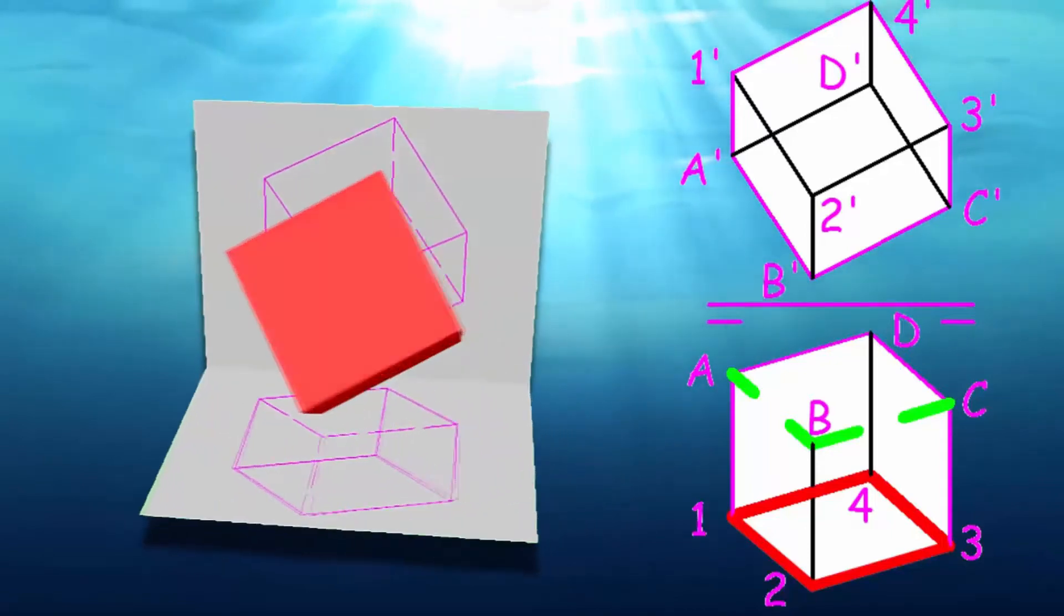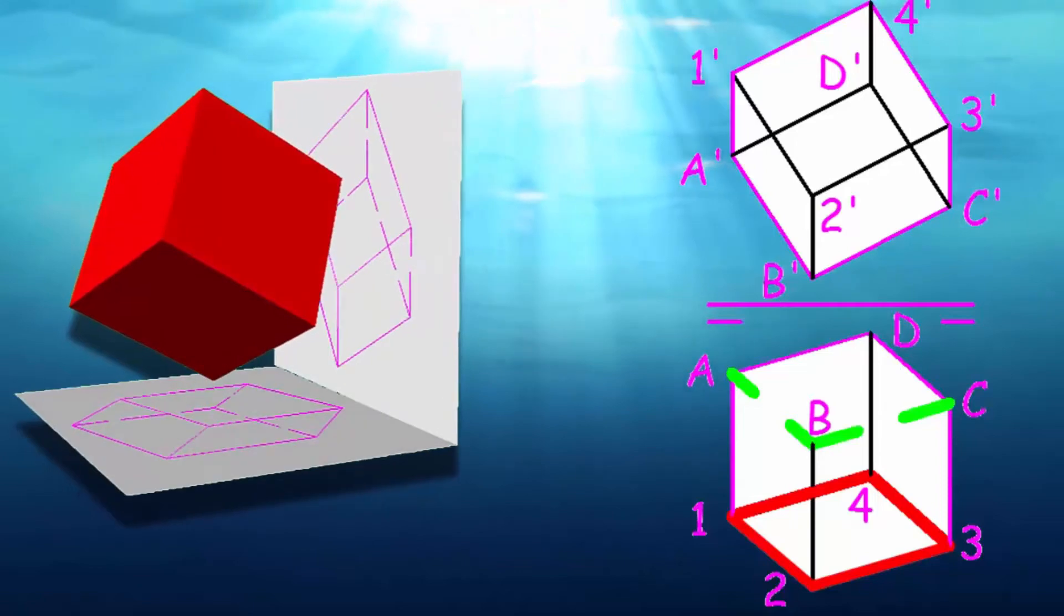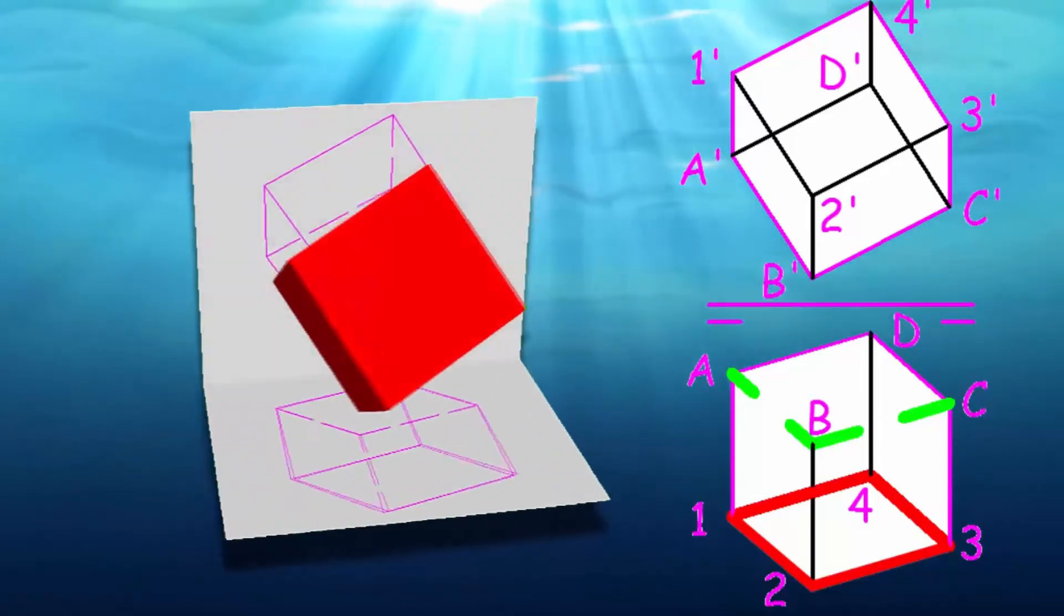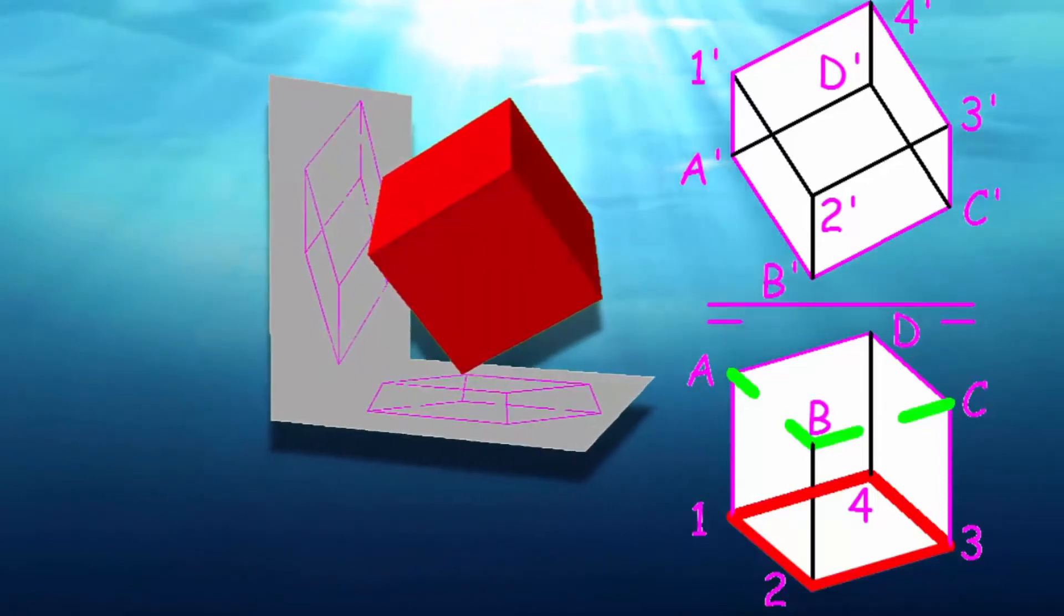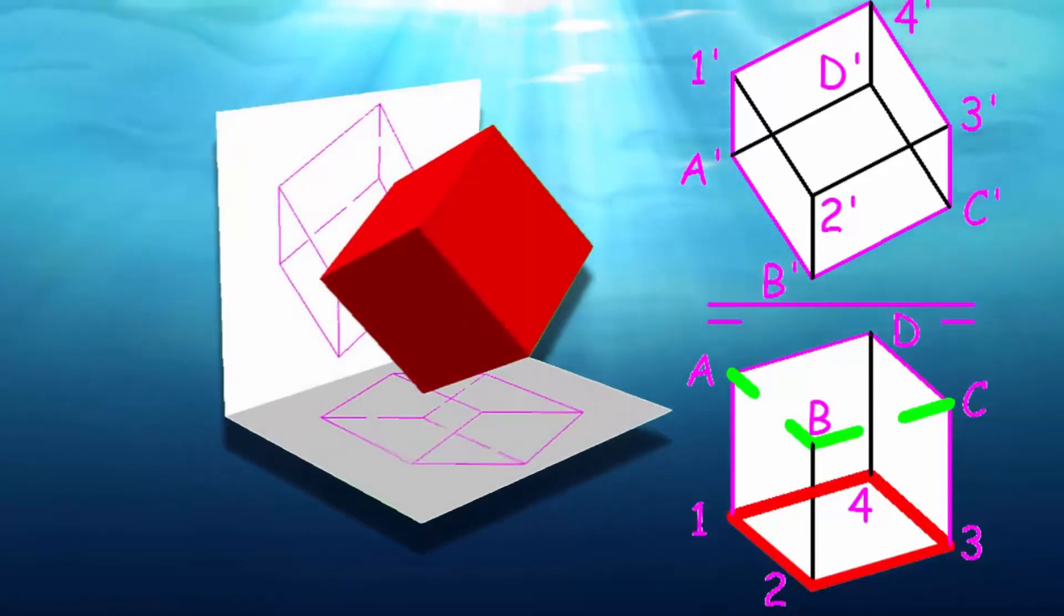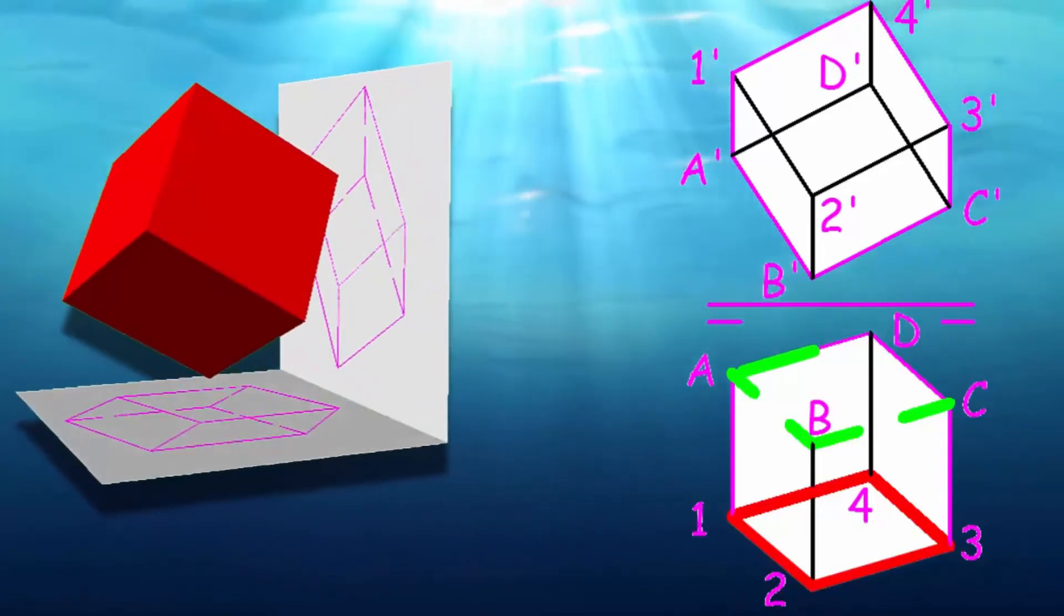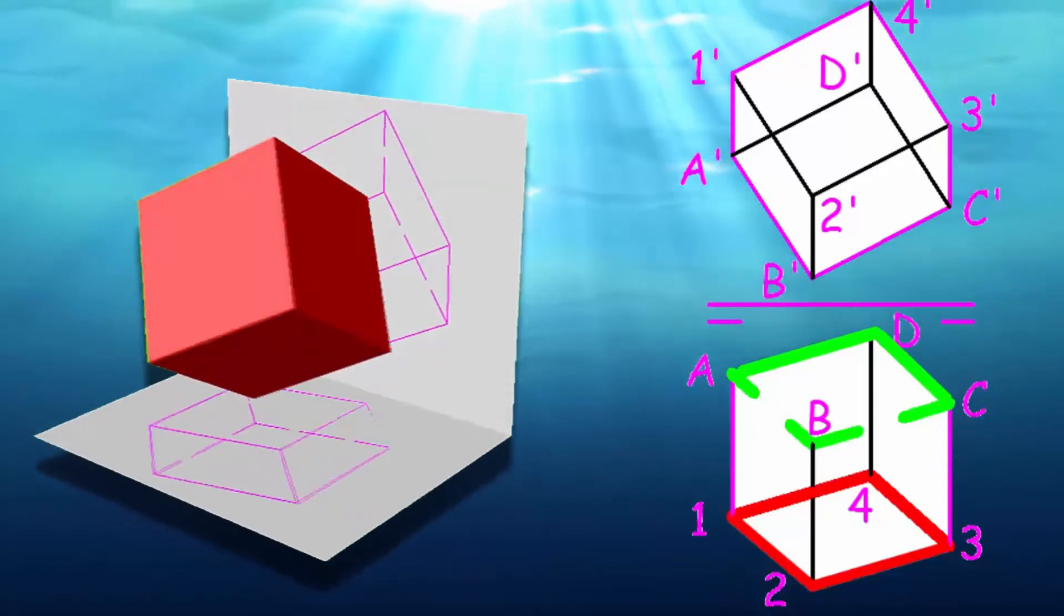The first rule, the contour is always seen, prevails over the latter. Thus, although the face ABCD is hidden, edges AD and DC, being part of the contour, remain in view.